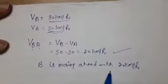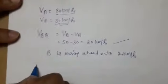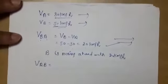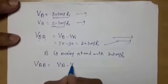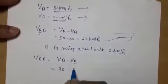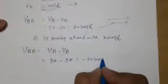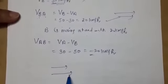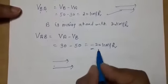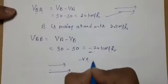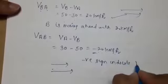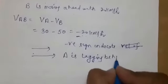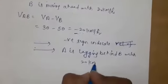If we calculate velocity of A with respect to B — VAB equals VA minus VB equals 30 minus 50 equals minus 20 km/h. The negative sign indicates that A is lagging behind B with a speed of 20 km/h. Because B has more speed, A is lagging behind. The 30 km/h is the common speed; the extra 20 km/h is why B moves ahead.